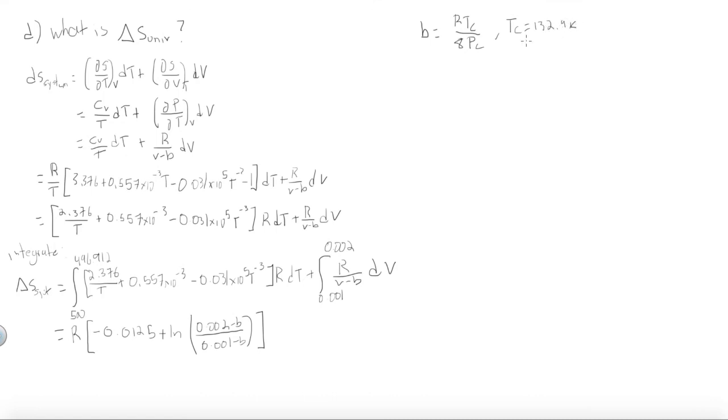And as before, critical temperature of carbon dioxide is 132.9 Kelvin, and the critical pressure of carbon dioxide is 34.96 times 10 to the 5 Pa. Solving this, we get that b is equal to 3.95 times 10 to the negative 5 meters cubed per mole.